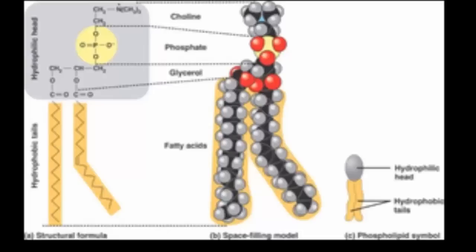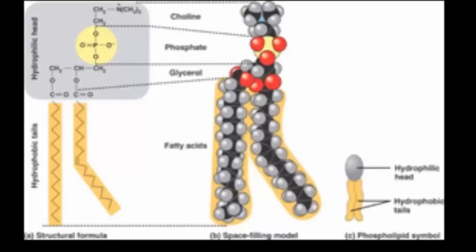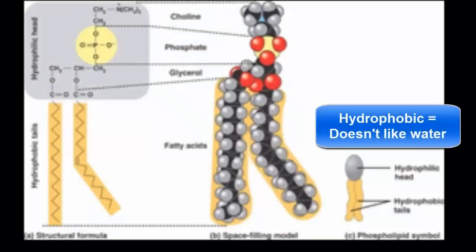A phospholipid has two basic parts: a hydrophilic head and a hydrophobic tail. Hydro means water. Between philic and phobic — you're probably more familiar with phobic. If you have a phobia of something, arachnophobia is a fear of spiders, acrophobia is a fear of heights. So phobic means fear, and philic is the opposite — it likes or is okay with something. Hydrophobic means it doesn't like water, and hydrophilic means it's okay with water.